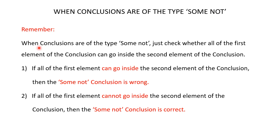When conclusions are of the type some not, just check whether all of the first element of the conclusion can go inside the second element of the conclusion. If all of the first element can go inside the second element, then the some-not conclusion is wrong. If all of the first element cannot go inside the second element, then the some-not conclusion is correct.